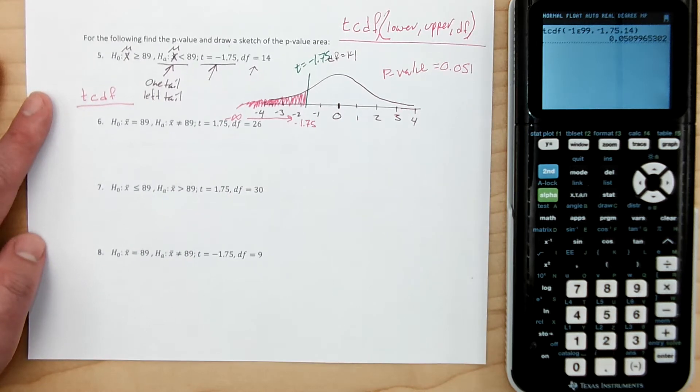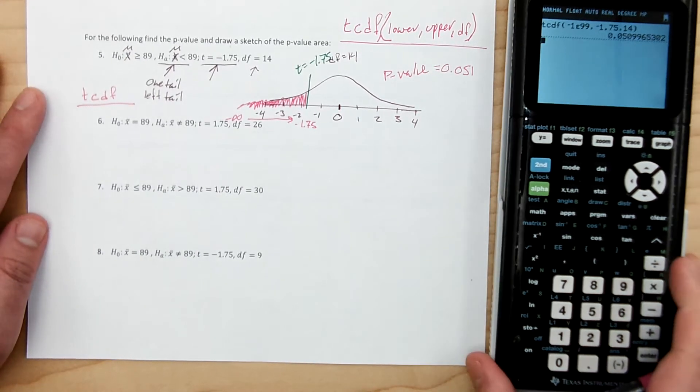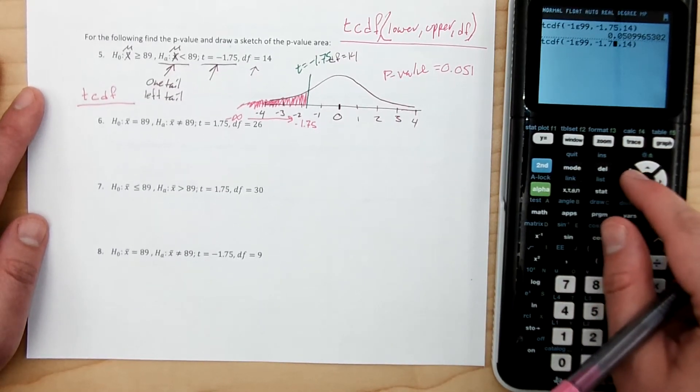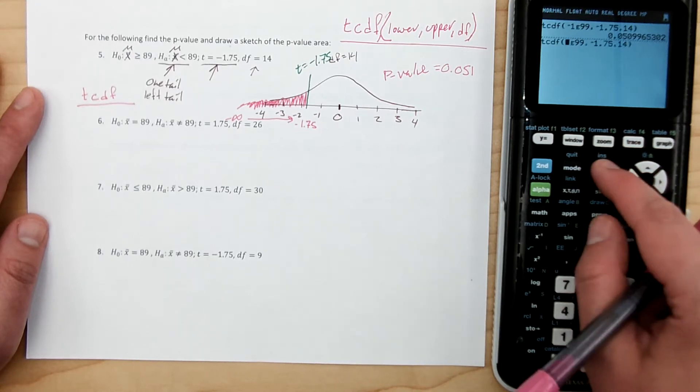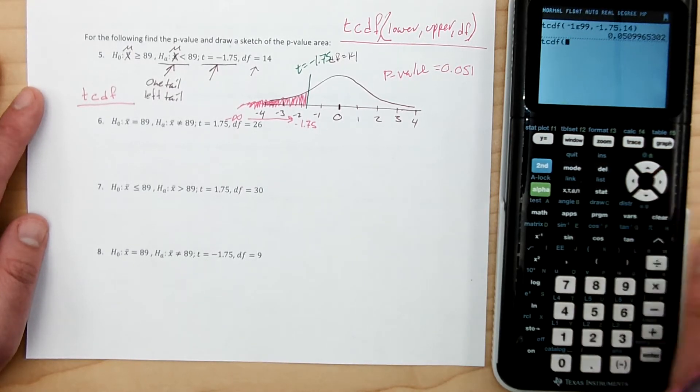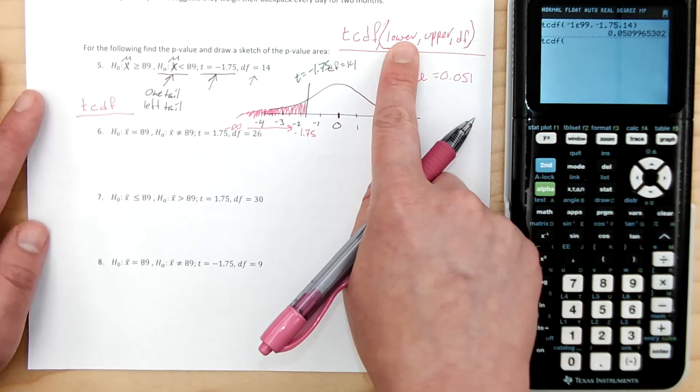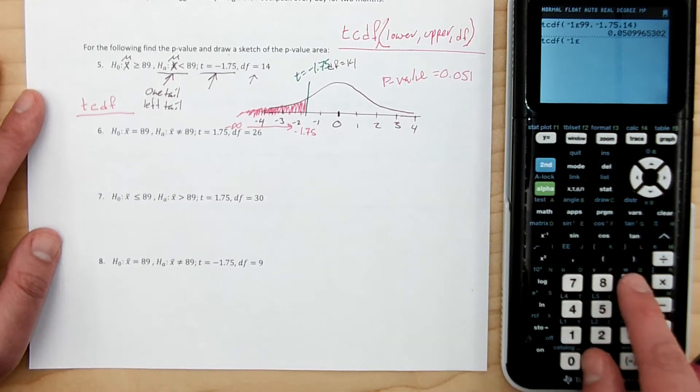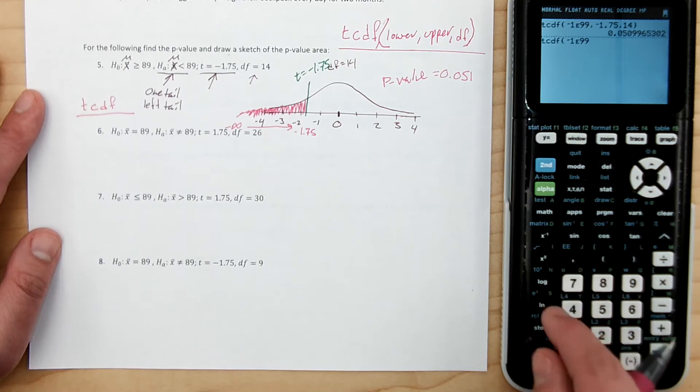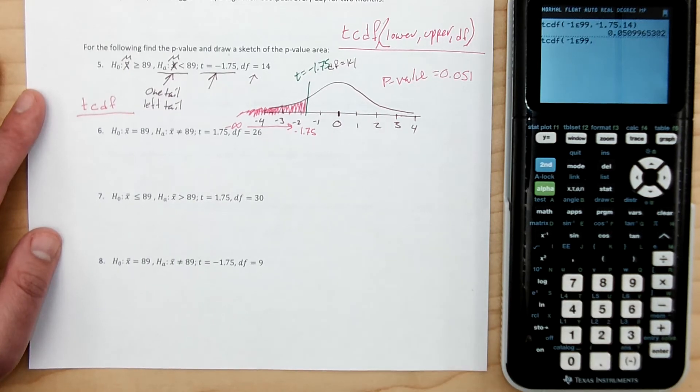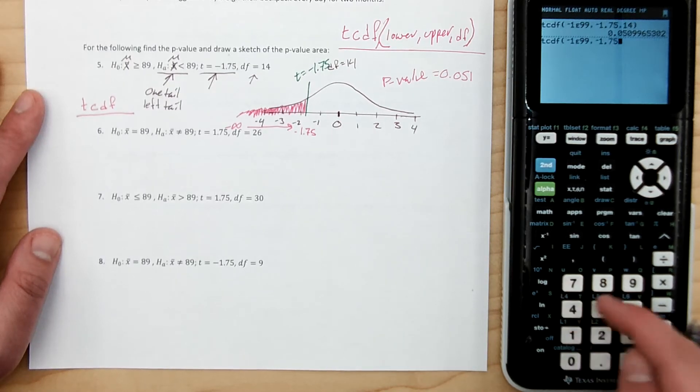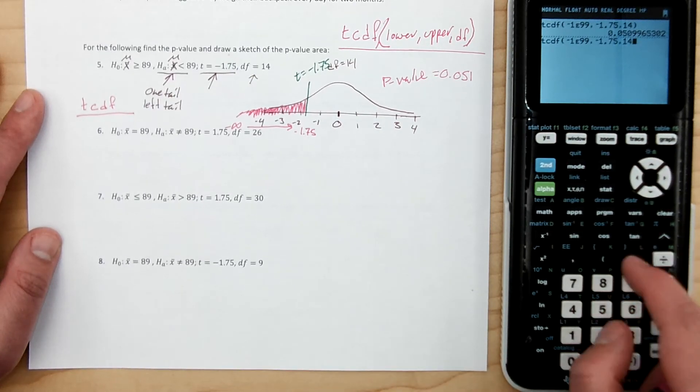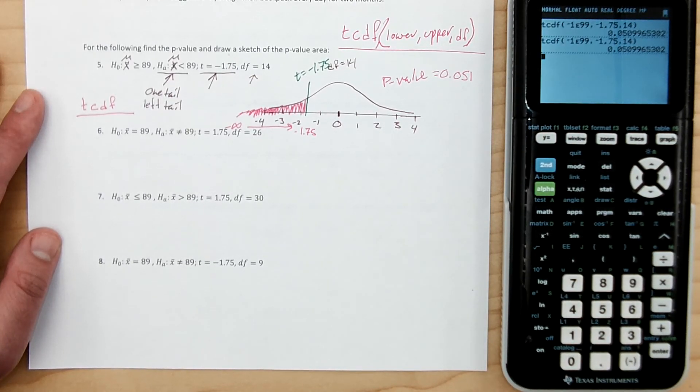I will make a second video for using the normal distribution. Oh, so if you hadn't had that prompt screen, what you would have had is this, and it would have looked exactly like this. So again, it wants you to put in the lower bound, the upper bound, the degrees of freedom. So again, it'd be negative 1E99. But now you need to remember to put in that comma. Here's the comma right here. It's the same button as the E. How convenient. Negative 1.75. There's my upper bound comma. It's a T distribution. So it needs the degrees of freedom. And we'll hit enter. And that's all that there is to it.